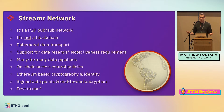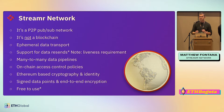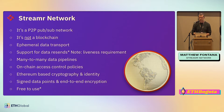Essentially the Streamr network provides infrastructure for many-to-many data pipelines. Our access control is on-chain — that's one of the main touch points with the blockchain. All the data is cryptographically signed, every single data point signed by the private key of the user, and it comes with end-to-end encryption out of the box if you choose to use it.